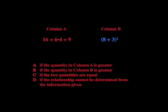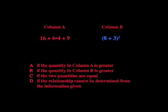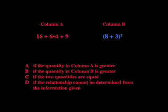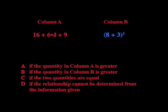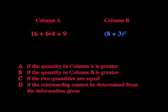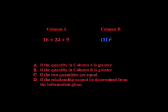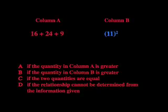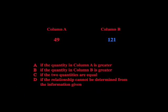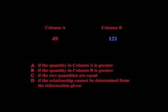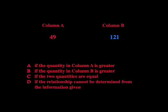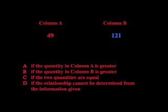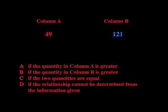But what happens to a student who correctly recognizes the 2 to the fourth is 16, but in the middle of the test gets confused and thinks that 2 squared is actually 8? They then add 8 to 3 and get 11 squared for column B. The student correctly figures out that column A is equal to 49, but because of that one little mistake, they think that column B is actually 121.